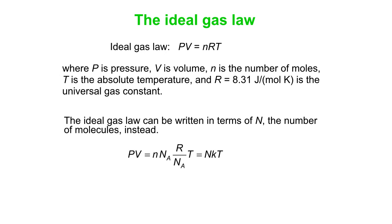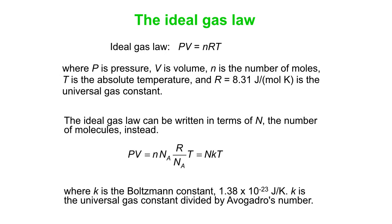We can write that as N, the number of molecules. That is the number of moles times the number of molecules per mole, Avogadro's number. And then you can write that in the form of another constant. So, instead of little n times big R times T, you get big N times little k times T.